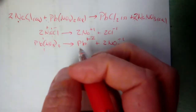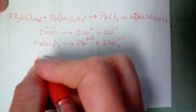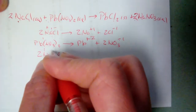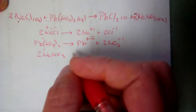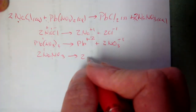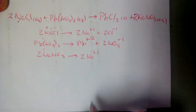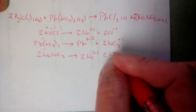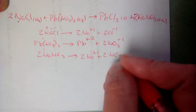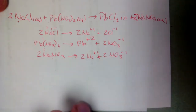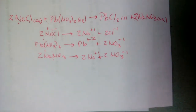Sodium nitrate is aqueous, so we break it down: it splits into 2 Na⁺ (each +1) and 2 NO3⁻ (each −1). With the coefficient of 2, we get two of each ion. That completes dissociation of all aqueous solutions.